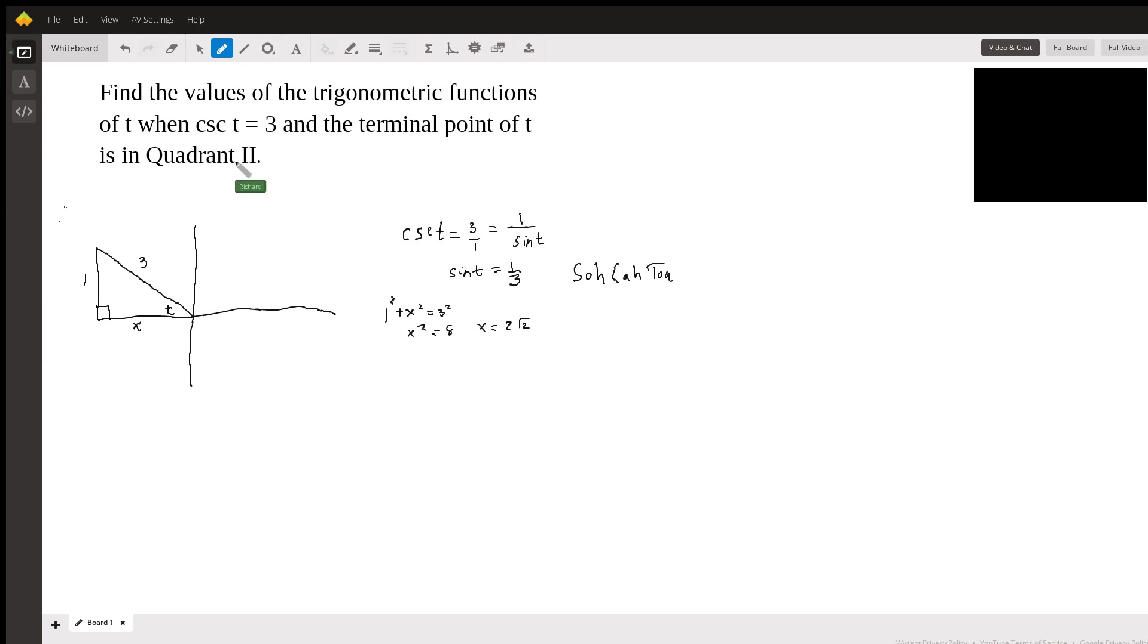Okay, so now we're ready to answer the question. I'll change colors just to highlight the answers. So let's go with sine t, cosine t, tangent t, and then we'll just use the reciprocals: cosecant t, secant t, cotangent t. All we have to do now is look at the triangle to get the sine. Its sine is opposite over hypotenuse, so that's going to be one-third. We knew that already.